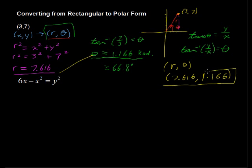Okay, that is converting some coordinates, the coordinate into polar form. Now let's look at the equation. We have 6x minus x squared equals y squared.